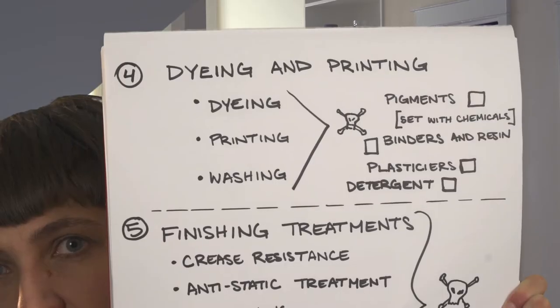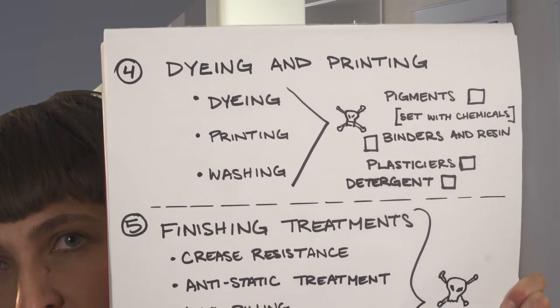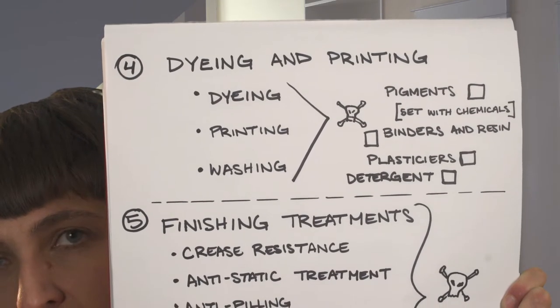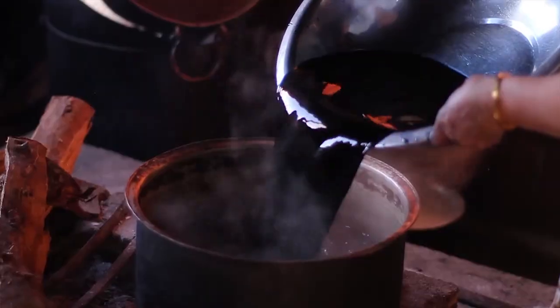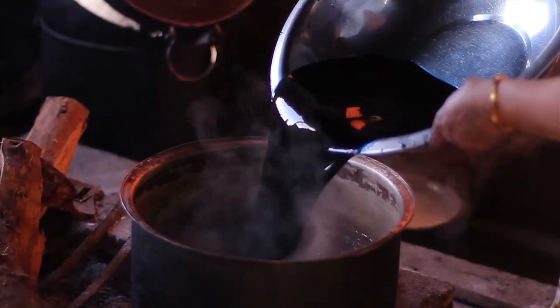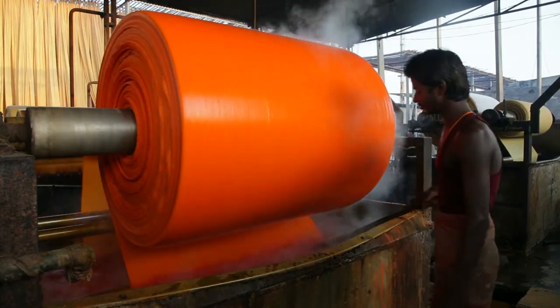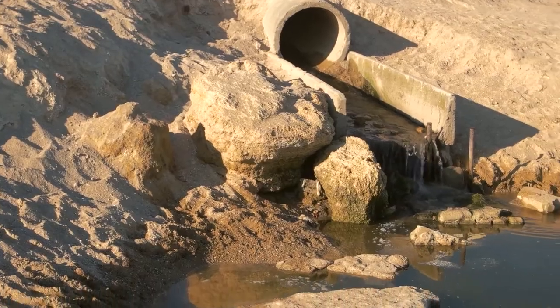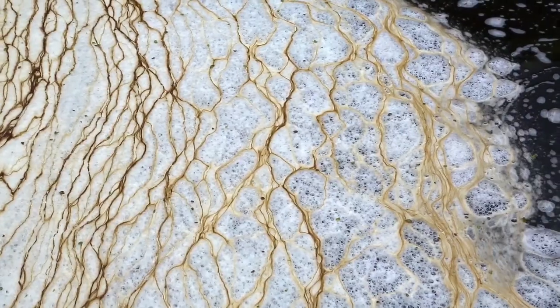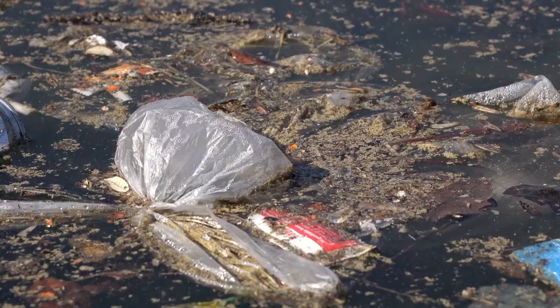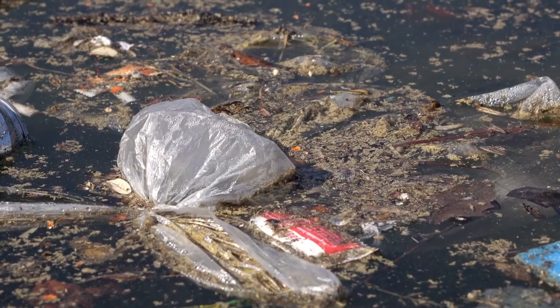Number four: dyeing and printing. There is so much water waste in this process — printing and washing. They use pigments, binders, plasticizers, and detergents. All of this waste is going back into the water system, so you can only imagine how much dye and chemicals are being dumped into our water system.